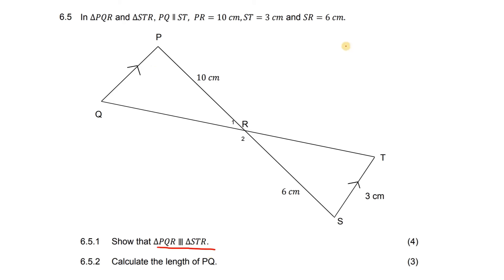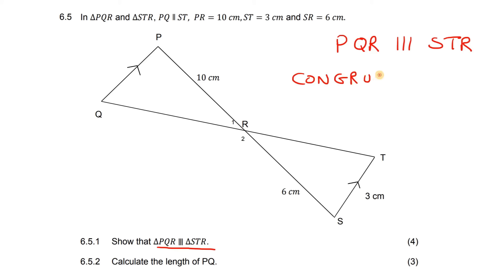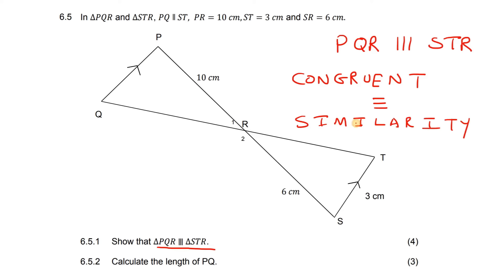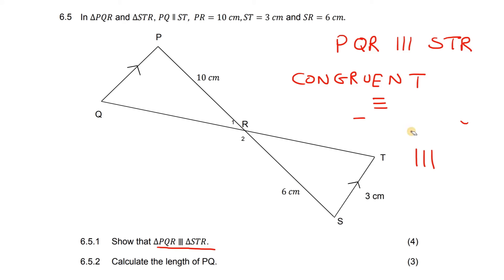Now, they said PQR and then they've got three lines going that way. Do those three lines mean congruent, or do those three lines mean similar? Well, it would definitely be similar. Why? Because remember, in the word congruence, we can see there's an E. Whereas in the word similarity, there's three I's, one, two, three, and so the lines go that way. So we are definitely busy with similarity.